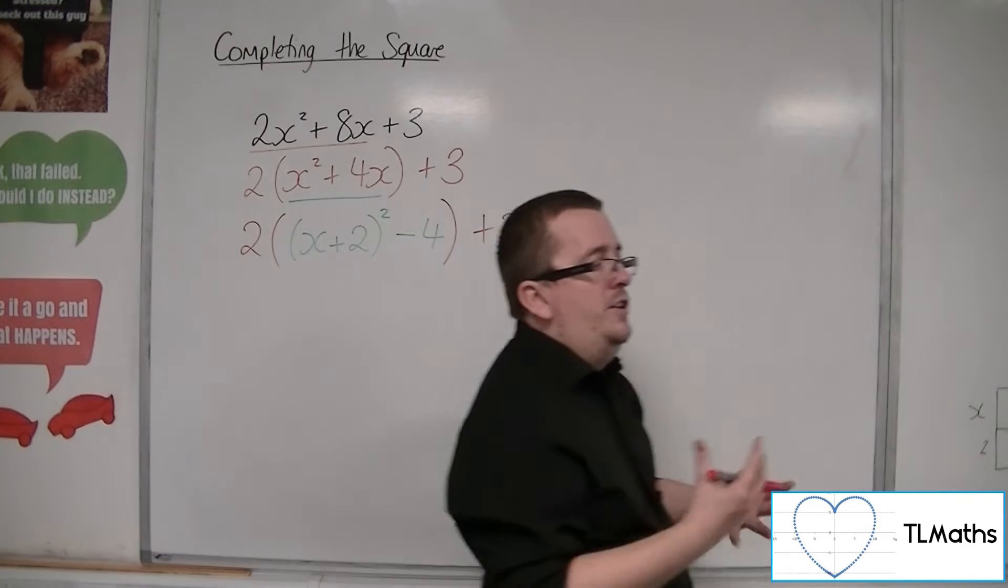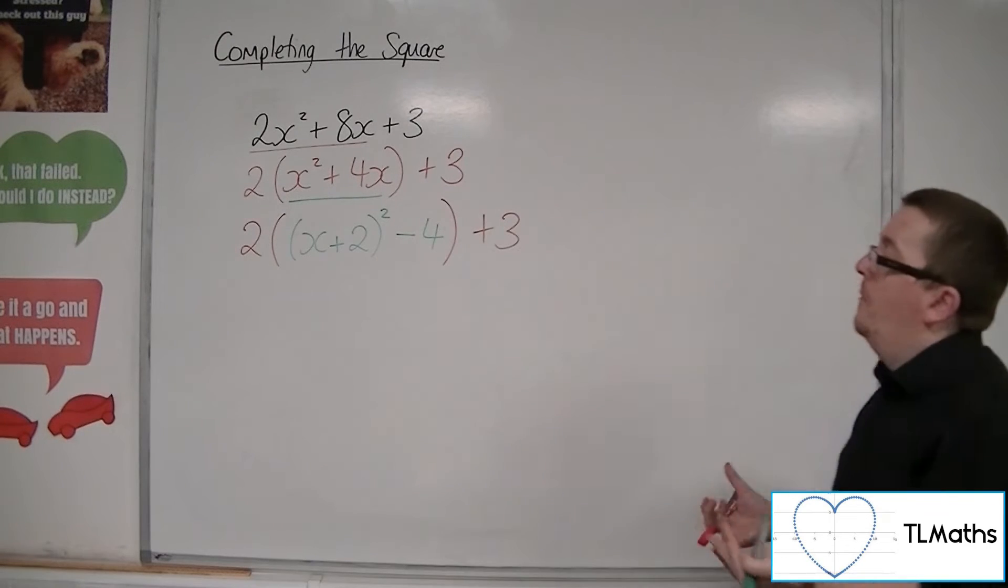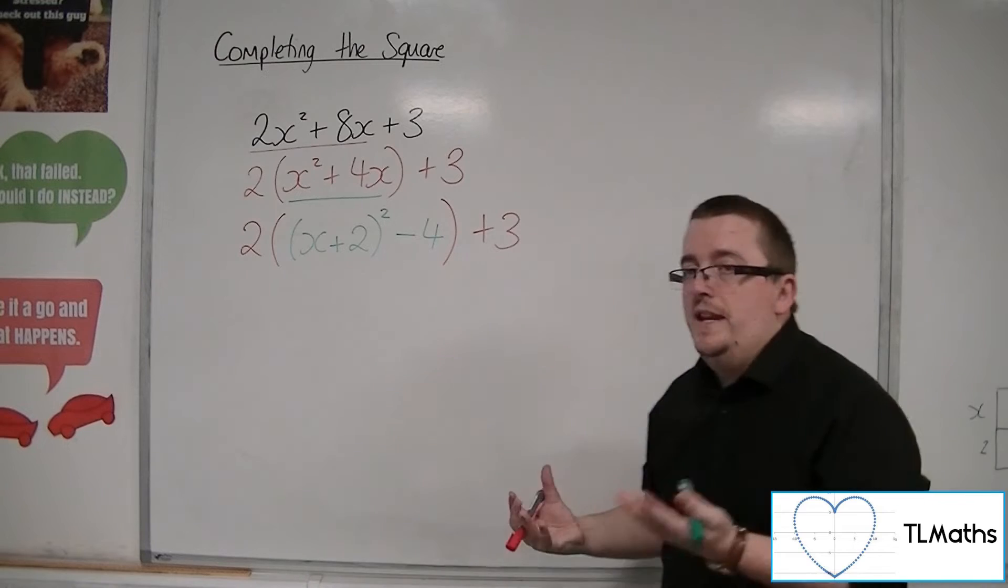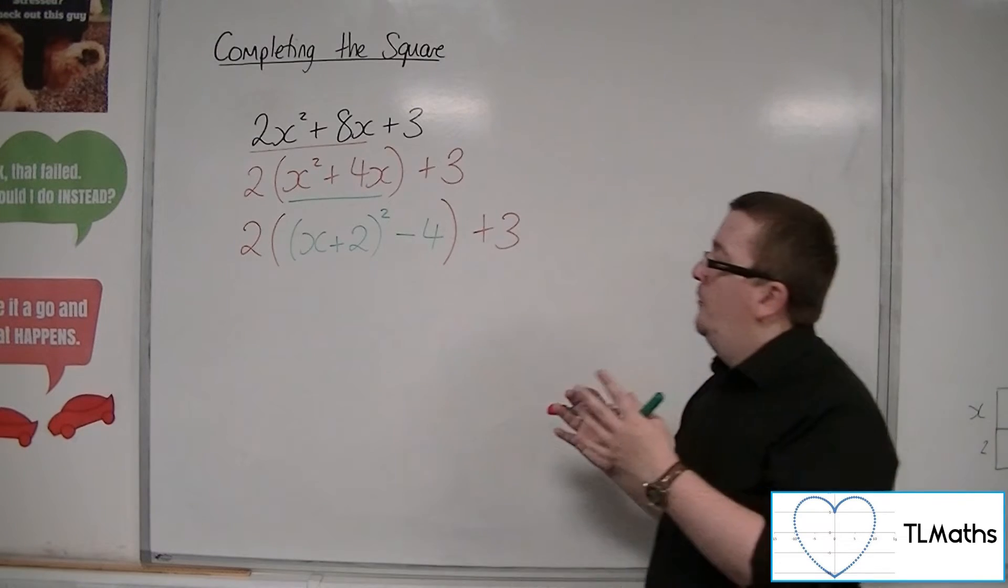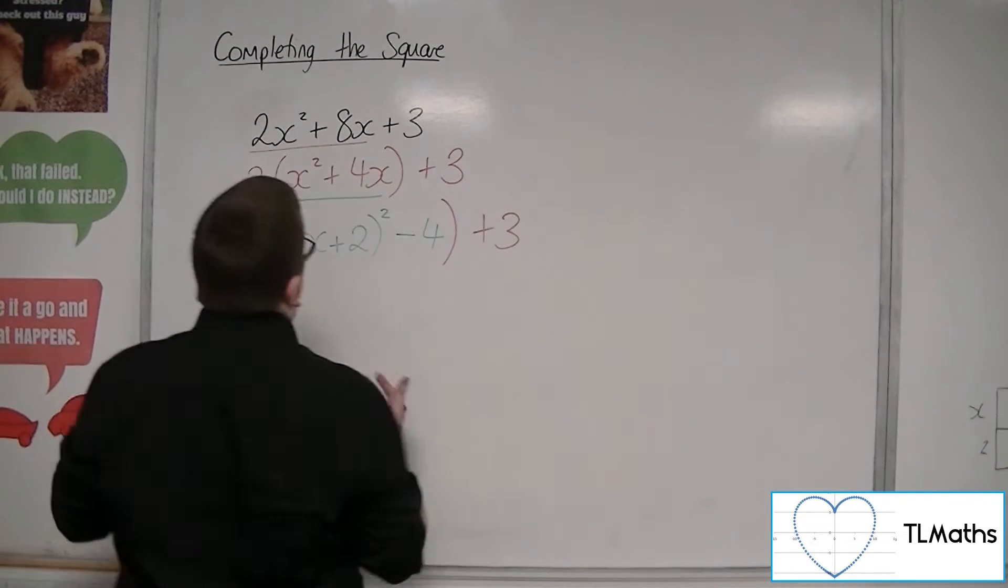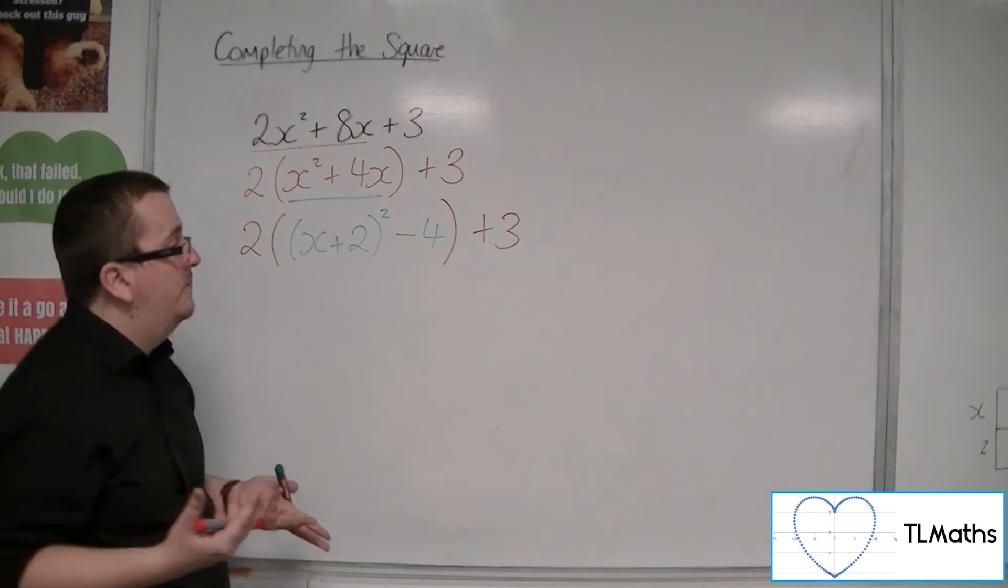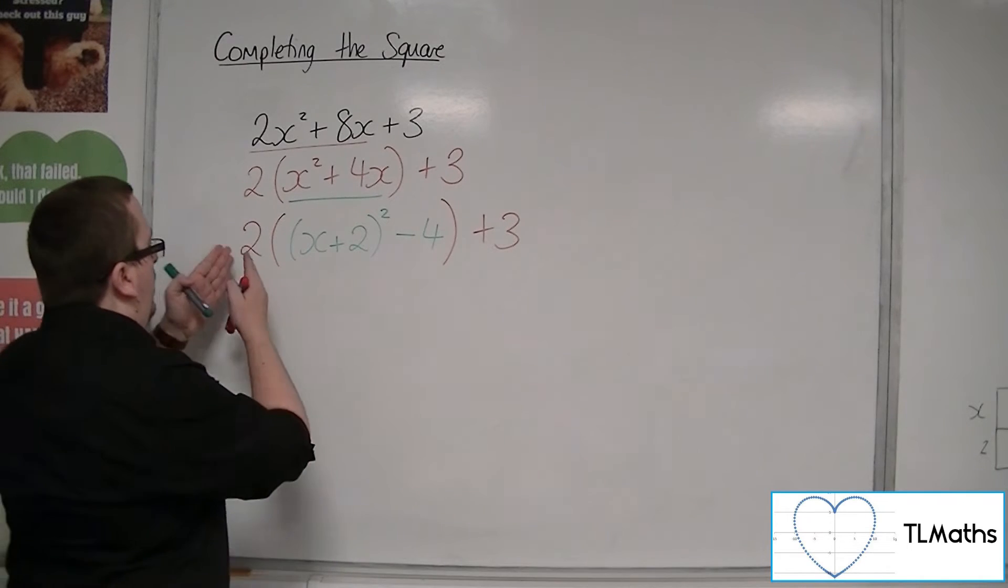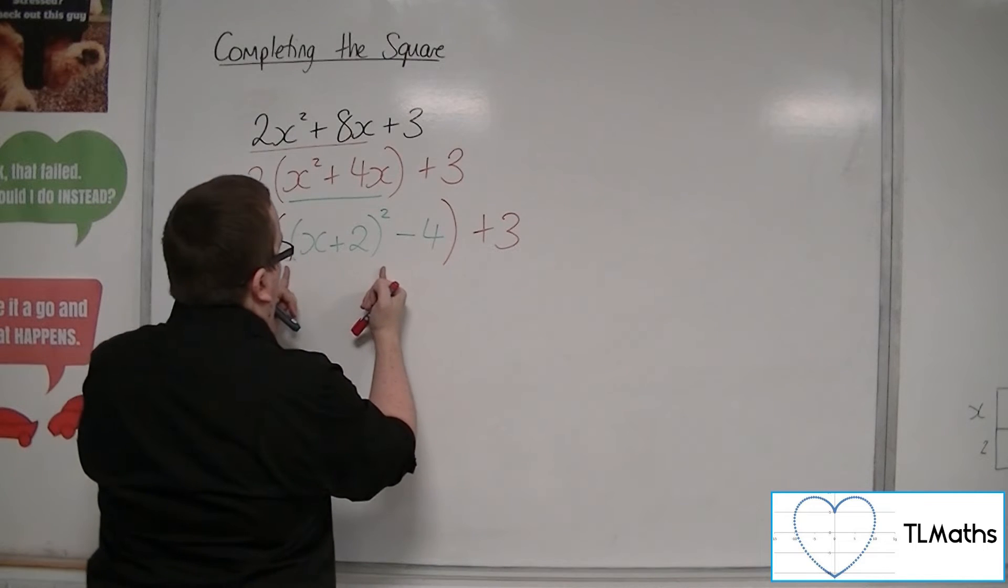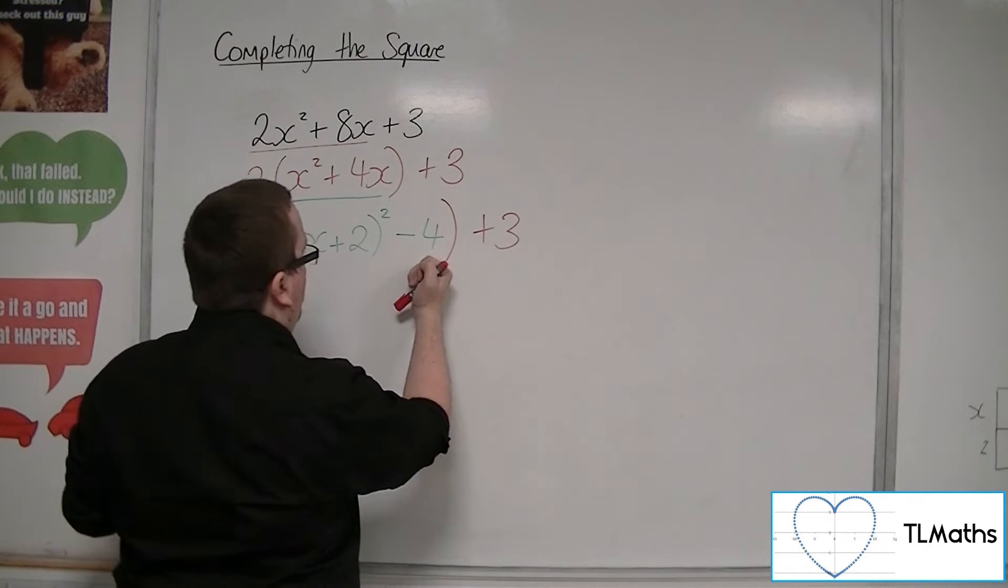So it's looking kind of complete the square form now, but I still need to simplify it a little bit more, because I've got a bracket within a bracket. I don't particularly like that, so what I'm going to do is I'm going to multiply the 2 by the x plus 2 squared and by the minus 4.